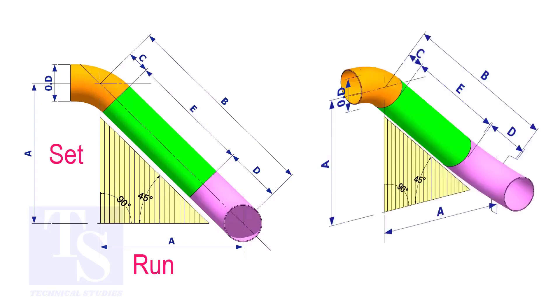In an offset, if the including angle is 45 degrees, the set and the run shall be the same. If the value of the set and the run are equal, the value of the travel is set or the run multiplied by 1.414.